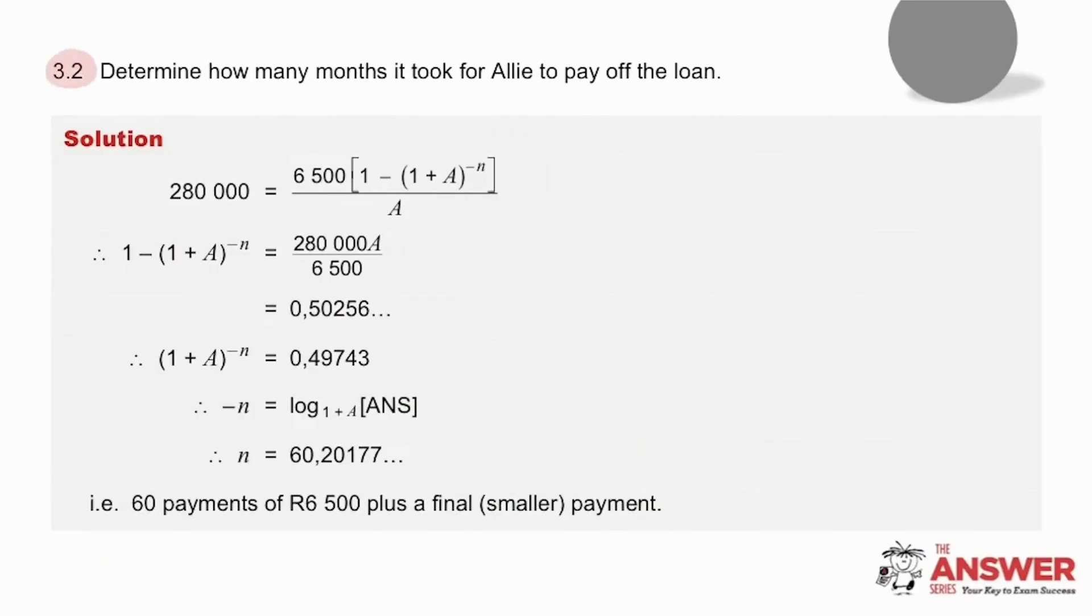Question 3.2 is asking us how many months it is going to take to pay off the loan. So the present value of the loan was 280,000 rand. The monthly payments are 6,500 and because we are being asked how many months we therefore need to determine the value of n. Now n is deep in this fraction so work carefully and remember to introduce the log function at this point here. Because our answer for n is 60 comma something, this tells us that there will be 60 payments of 6,500 rand plus a final smaller payment.